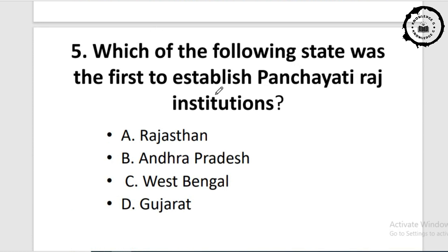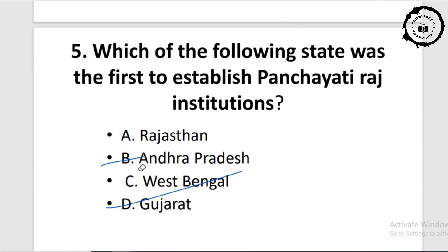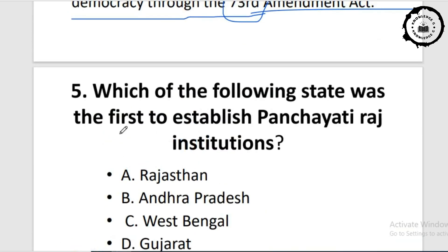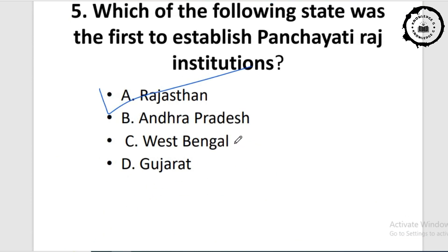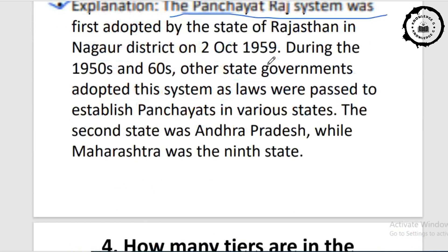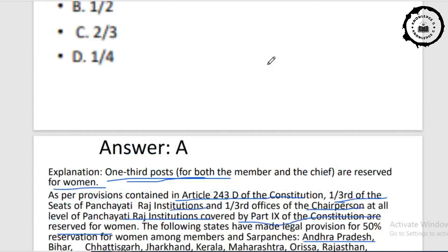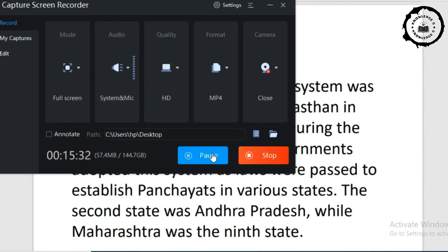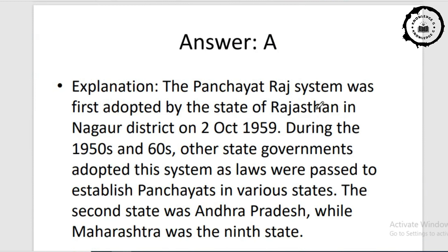Question five: which of the following states was the first to establish Panchayati Raj institution? Option A: Rajasthan. Option B: Andhra Pradesh. Option C: West Bengal. Option D: Gujarat. We already know the answer — option A, Rajasthan. The explanation is the same as discussed earlier, so please read that explanation carefully.